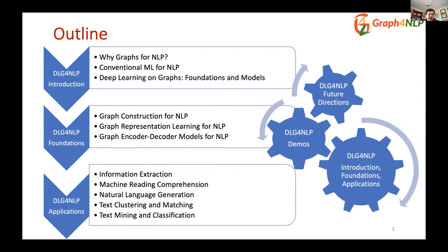In the second part — the key cornerstone for DLG for NLP — we will cover: how to construct graphs from text sequences for various NLP applications, how to leverage graph representation learning techniques for different NLP problems, and a popular graph-based encoder-decoder model. In the third part, we focus on five popular NLP applications: information extraction, machine reading comprehension, natural language generation, text matching, and text classification. We will also demo the DeepGraph for NLP library and conclude with future directions.